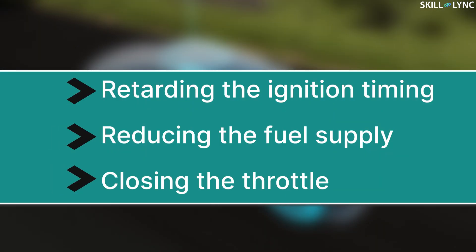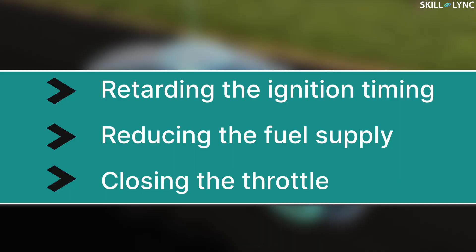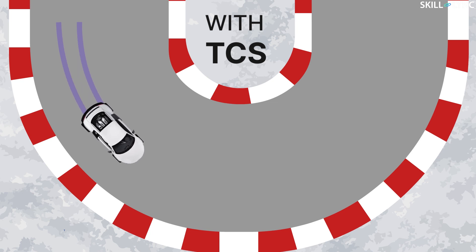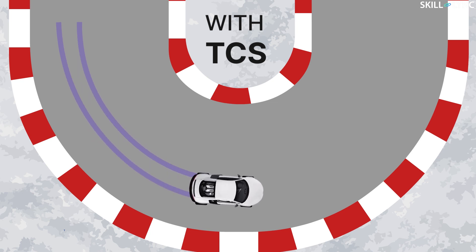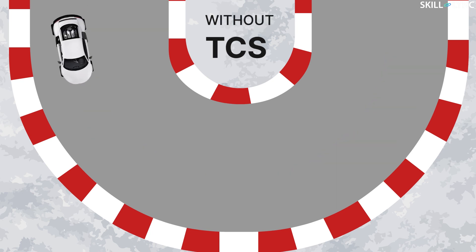In some vehicles, the TCS can also control wheel spin by reducing engine power. This can be done either by retarding the ignition timing to cylinders, reducing the fuel supply to the cylinders, or by closing the throttle. When this is done, the driver may sense a pulsating vibration on the gas pedal.